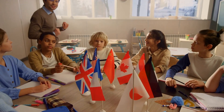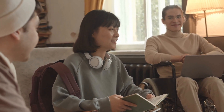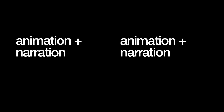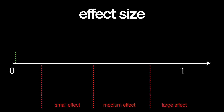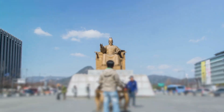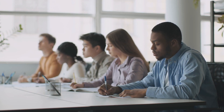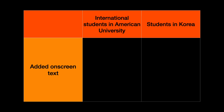What about students learning material in a second language? In one study, international students at an American university were presented with materials in English, with one group given pictures with narration and another with on-screen text in English added. The results showed that adding on-screen text did not make a significant difference. However, in another group, researchers presented students in Korea with materials in English, and the group given the redundant on-screen text did better. The international students may have been fluent enough not to benefit, whereas the students in Korea benefited because the text helped reduce the extraneous processing needed to understand the speaker.